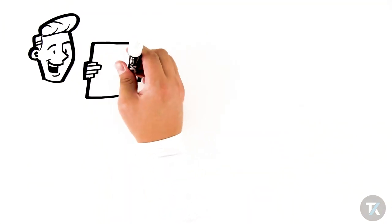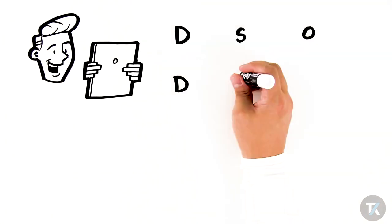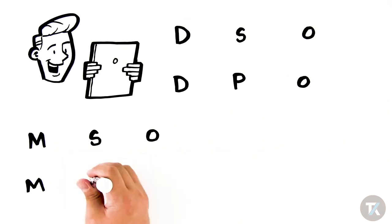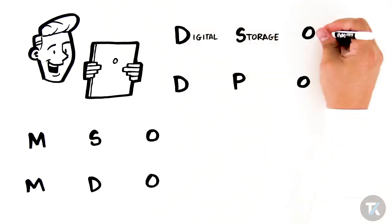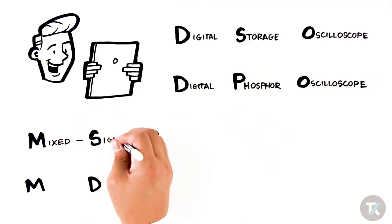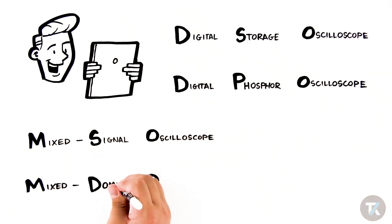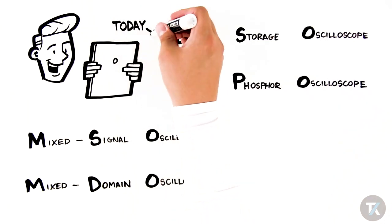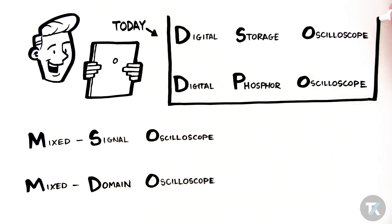You'll probably see different models referred to by their acronyms such as DSO, DPO, MSO, or MDO. These stand for digital storage oscilloscope, digital phosphor oscilloscope, mixed signal oscilloscope, and mixed domain oscilloscope. Most oscilloscopes in use today are DSOs, or digital storage oscilloscopes, or DPOs, digital phosphor oscilloscopes.